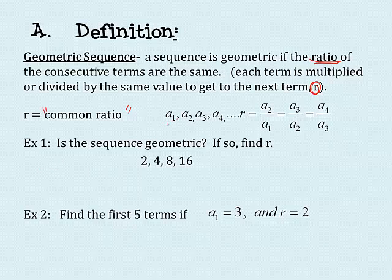Here's your sequence with terms a1, a2, a3, a4, and so on. To find that common ratio, you take the second term divided by the first, and it will be the same as the third divided by the second or the fourth divided by the third, and on and on.